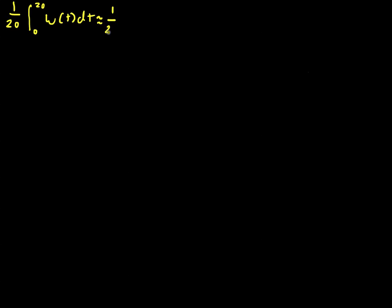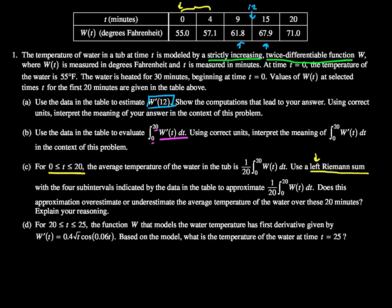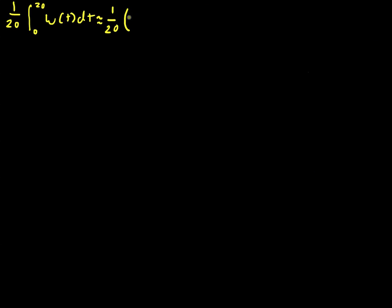Approximately 1 over 20 times the area of my first rectangle. That's going to be 4 wide and W of 0 tall. I'll write it as two steps, so 4 multiplied by W of 0. The left side, that's the area of the first rectangle, plus the second rectangle.